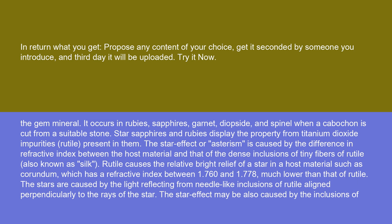Star sapphires and rubies display the property from titanium dioxide impurities — rutile — present in them. The star effect, or asterism, is caused by the difference in refractive index between the host material and that of the dense inclusions of tiny fibers of rutile, also known as silk. Rutile causes the relatively bright relief of a star in a host material such as corundum, which has a refractive index between 1.760 and 1.778, much lower than that of rutile. The stars are caused by light reflecting from needle-like inclusions of rutile aligned perpendicularly to the rays of the star.